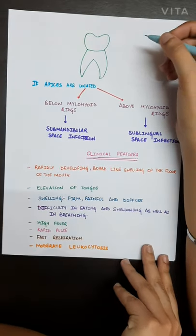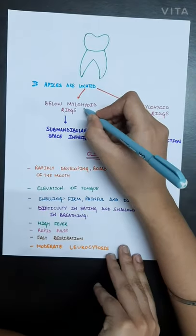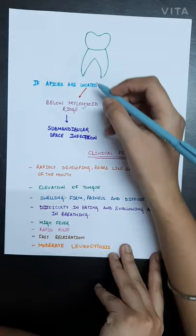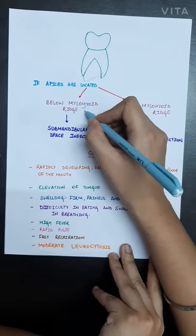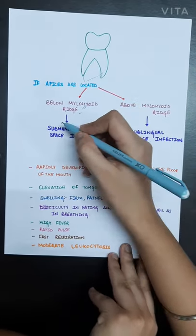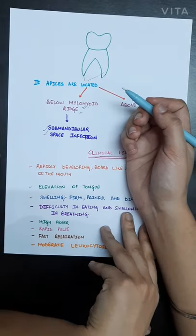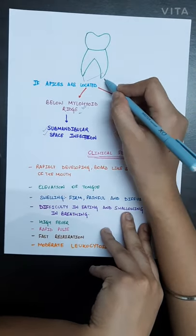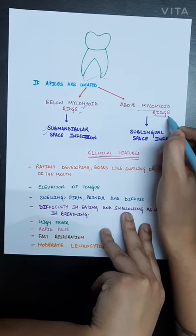Now, if the apices are located below the mylohyoid ridge, submandibular space infection will occur. But what if the apices are located above the mylohyoid ridge? Then sublingual space infection will occur.